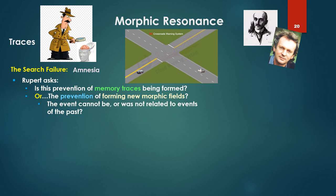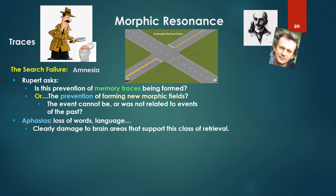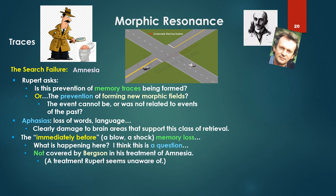So Rupert asks: is this the prevention of memory traces — that is, neural traces — even being formed? Or is it the prevention of forming new morphic fields — that is, the event could not be related to events of the past? He notes aphasias: loss of words, language ability, ability to draw — clearly damage to certain brain areas that support this class of retrieval or skill. This immediately-before memory loss is a question I'm not sure is covered by Bergson's long treatment of amnesia and aphasias — a treatment that Rupert just seems unaware of, because I don't see how he could not at least mention it otherwise, since this was a pioneering effort at the whole concept of the trace problem.